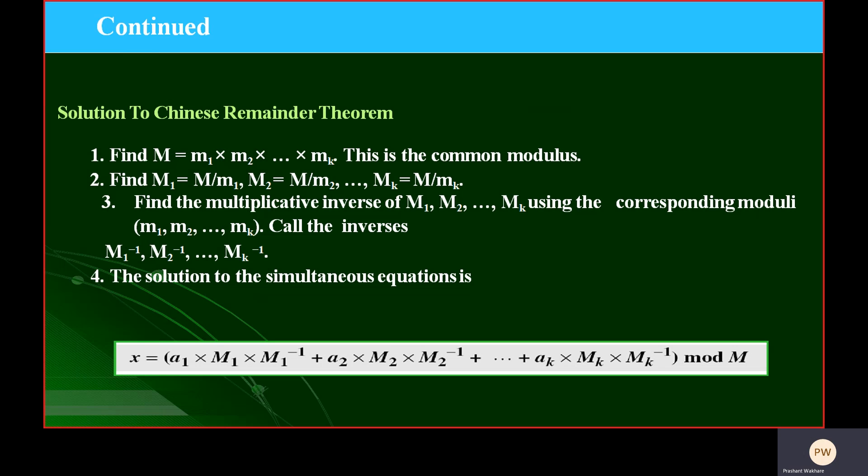Third point: find the multiplicative inverse of M1, M2, up to MK. And the last step is the solution to these simultaneous equations.